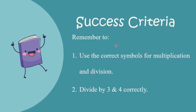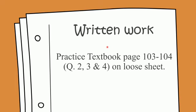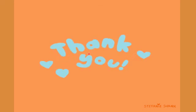The success criteria is: remember to use the correct symbols for multiplication and division, and divide by 3 and 4 correctly. Here's the written work for you, my dear students — you have to practice textbook pages 103 and 104, questions 2, 3, and 4 on a loose sheet. I hope today's topic is clear to you all. Stay home, stay safe, stay healthy, and thank you so much.